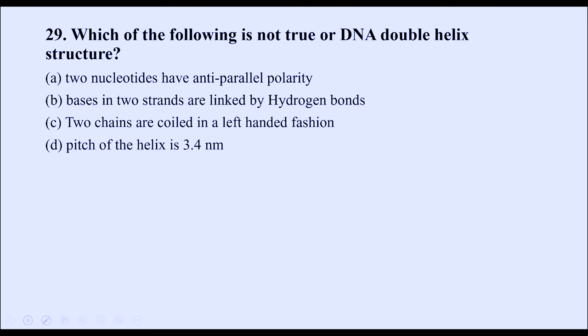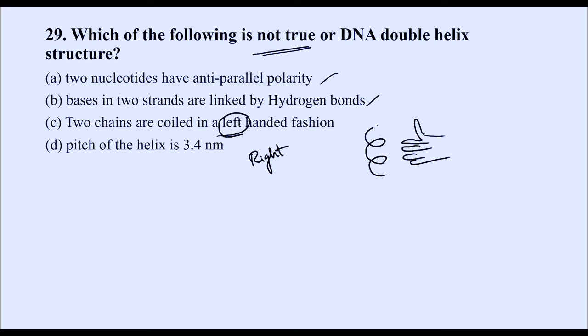Which is not true about the DNA double helix structure? Option A — two strands have antiparallel polarity — is right. Option B — bases in two strands are linked by hydrogen bonds — is right. Option C states two chains are coiled in a left-handed fashion — this is wrong, it is actually right-handed. Option D about the pitch of the helix is correct. So the incorrect statement is option C.